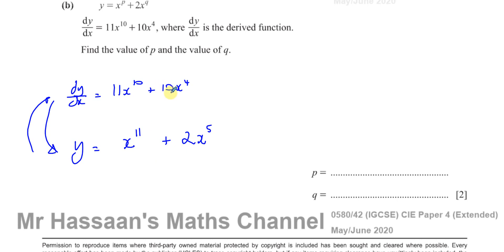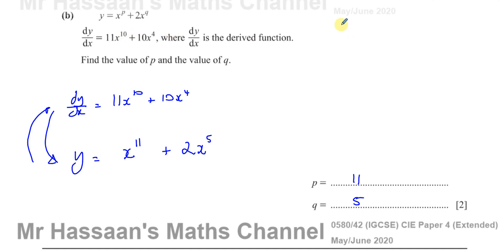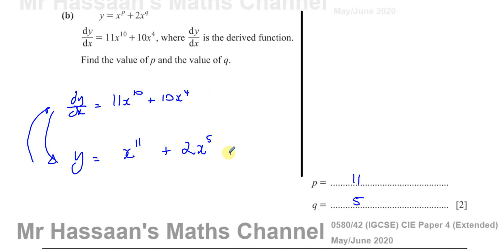So before differentiation, y was x to the power of 11 plus 2x to the power of 5. That means p equals 11 and q equals 5. They actually gave us the original form, so there's also a direct comparison method. Note that differentiating a constant gives 0 — that's something you'll encounter later in AS math — but either way you still get the answer.